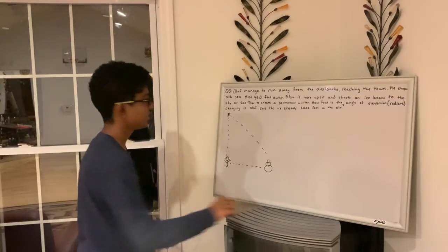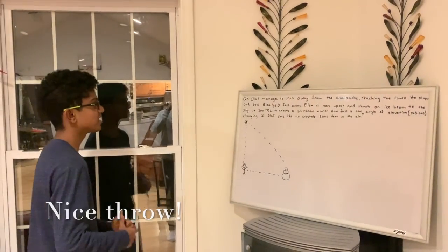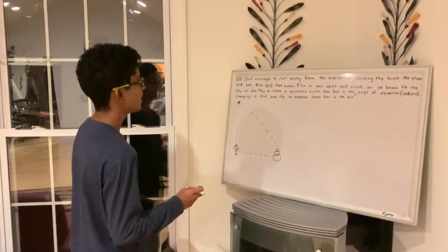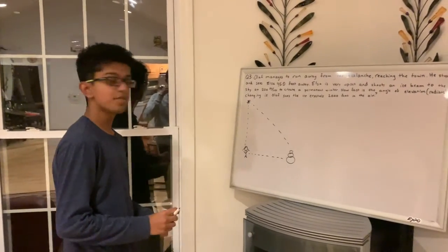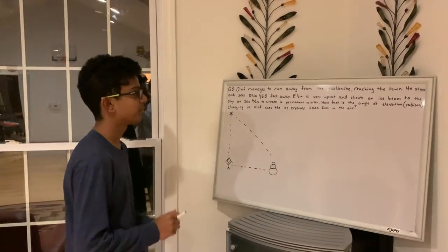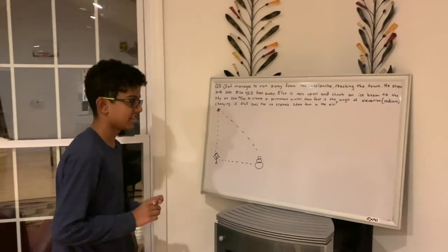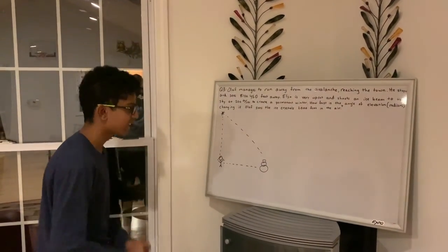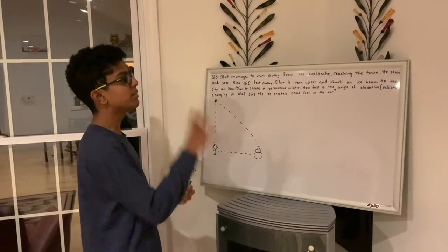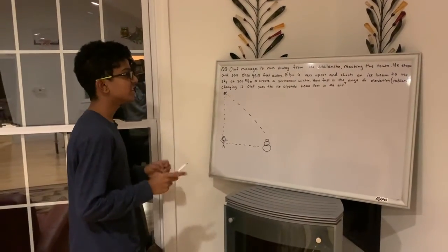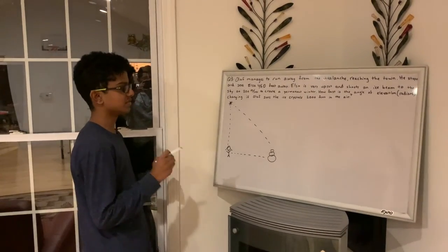So here is question 3, the last question based on what we saw in the video. Olaf manages to run away from the avalanche reaching the town. He stops and sees Elsa 400 feet away. Elsa is very upset and shoots an ice beam to the sky at 200 feet per second to create permanent winter. How fast is the angle of elevation in radians changing if Olaf sees the ice crystals 2000 feet in the air?